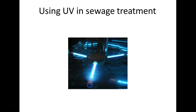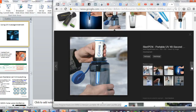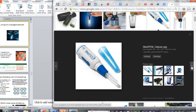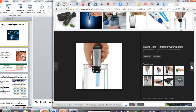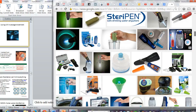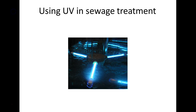Ultraviolet light can kill lots of things. Here you can see ultraviolet light being used to kill microbes in a camping water bottle as you go out into the wilderness. Conceivably, if you go to a country where water treatment is not as reliable as it is in the United States, you can buy one of these devices — this is not an endorsement, there are lots of them. It only takes a few seconds for ultraviolet light to kill microbes.